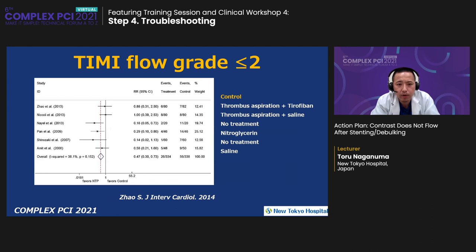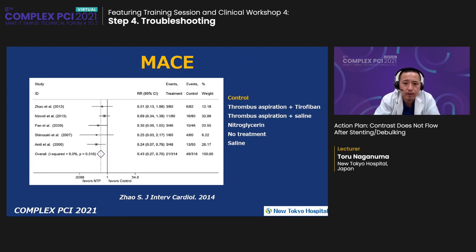This paper reported that nitroprusside favors regarding TIMI flow less than 2, as compared with control groups including thrombus aspiration and nitroglycerin. Similarly, nitroprusside favors regarding MACE as compared with control groups.